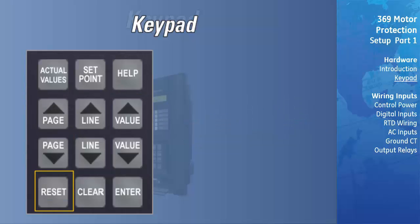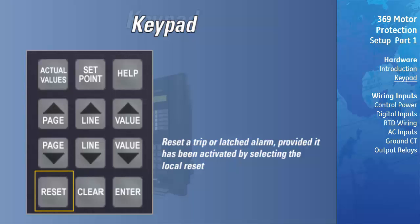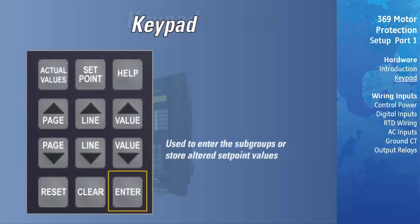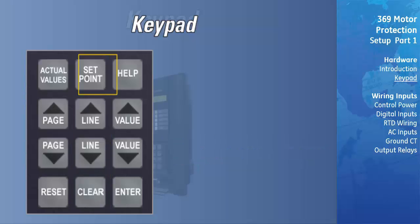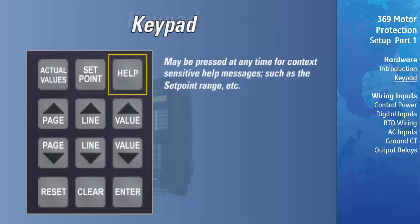The reset key may be used to reset a trip or latched alarm, provided it has been activated by selecting the local reset. The enter key is dual purpose. It is used to enter the subgroups or store altered set point values. The clear key is also dual purpose. It may be used to exit the subgroups or to return an altered set point to its original value before it has been stored. The help key may be pressed at any time for context sensitive help messages such as the set point range.